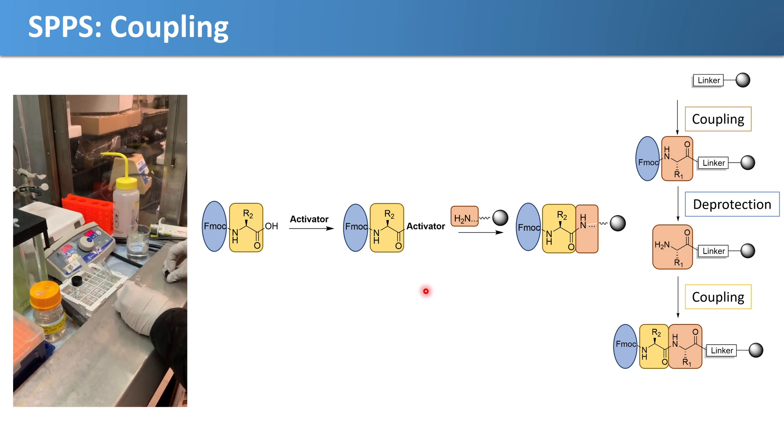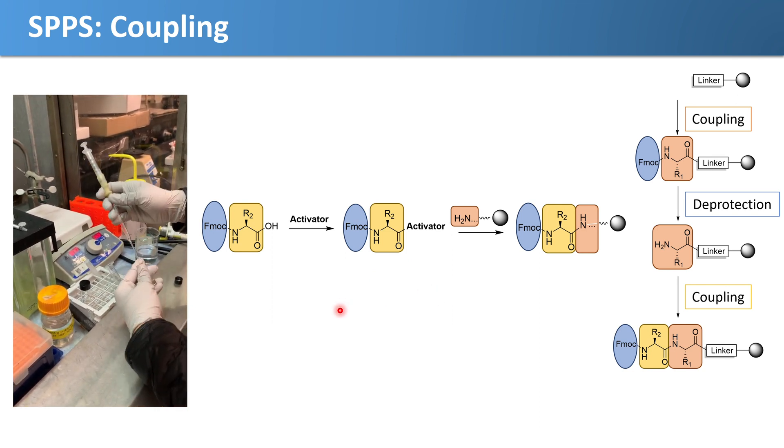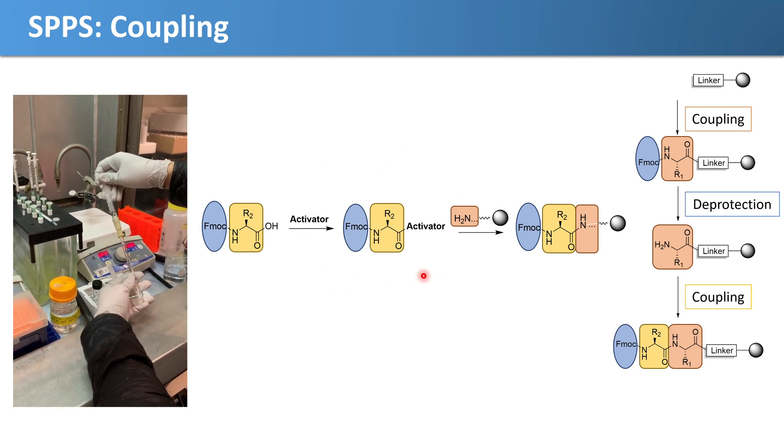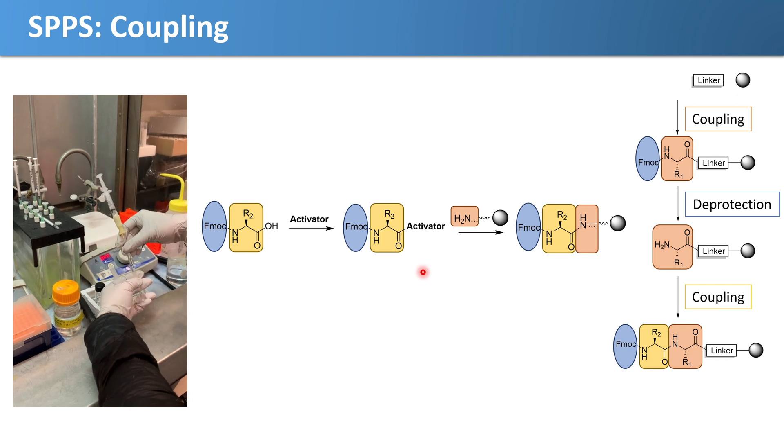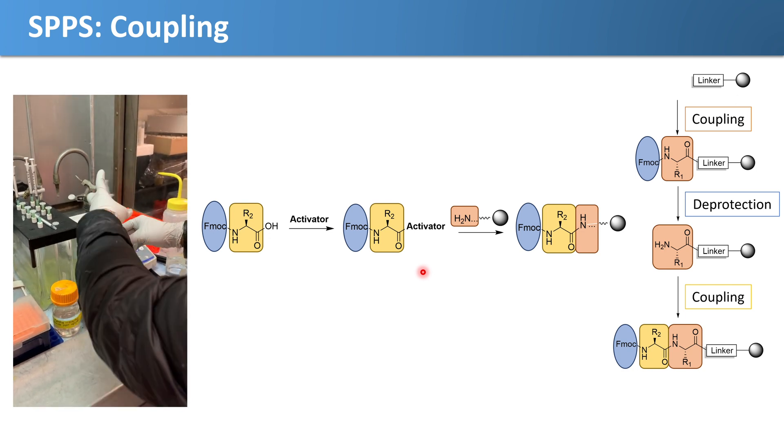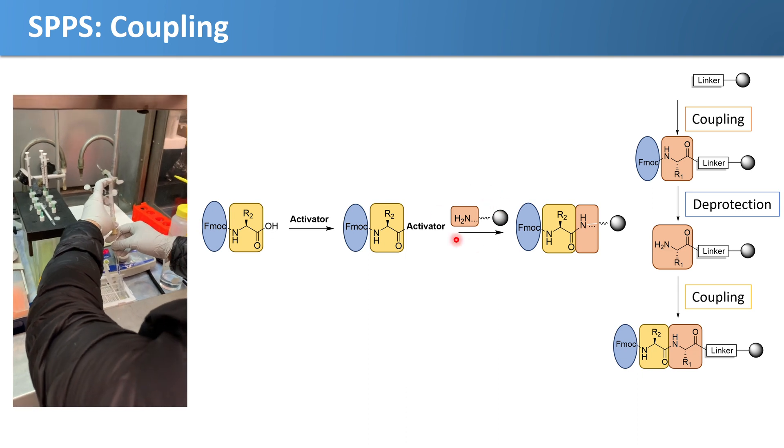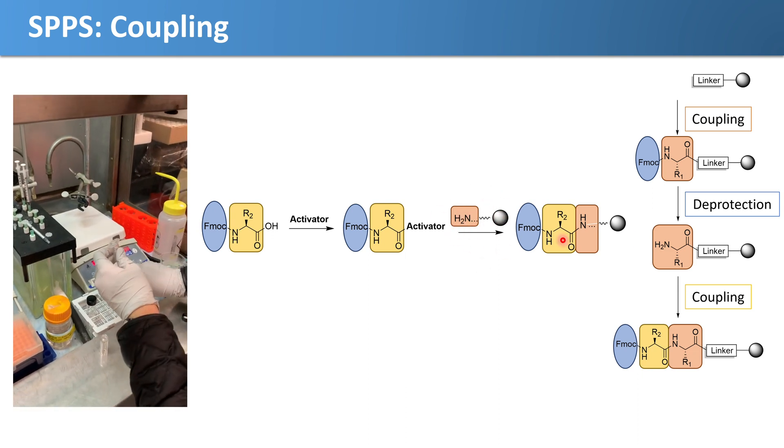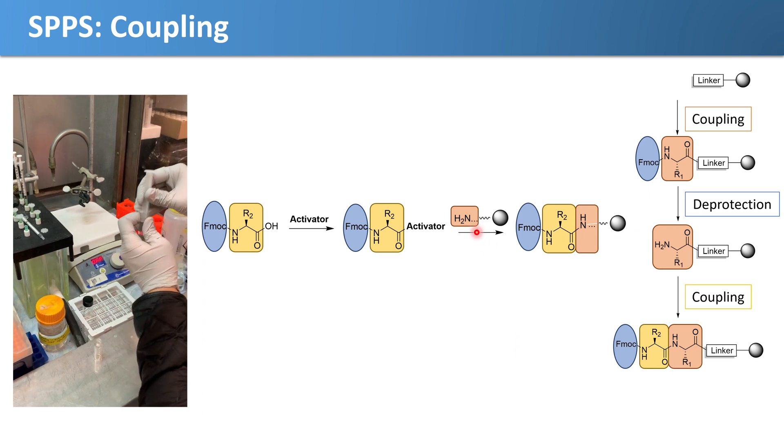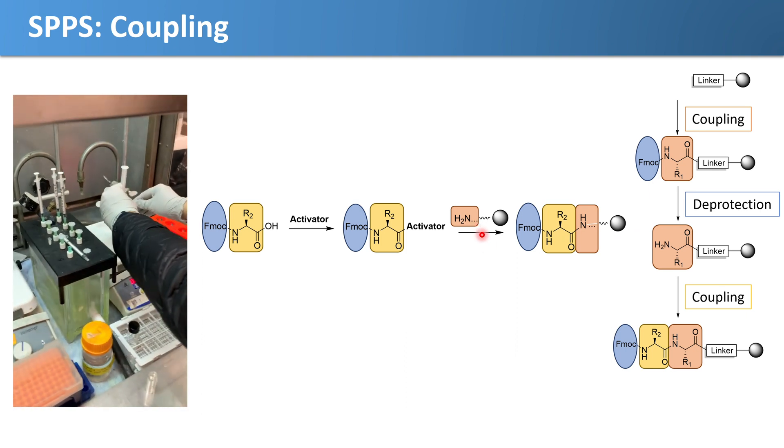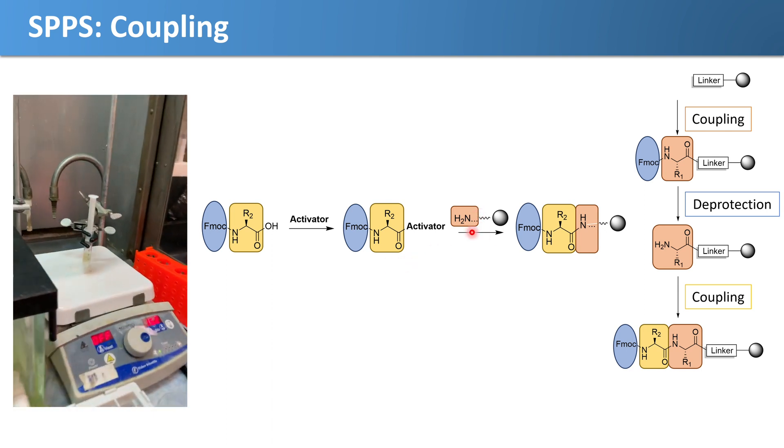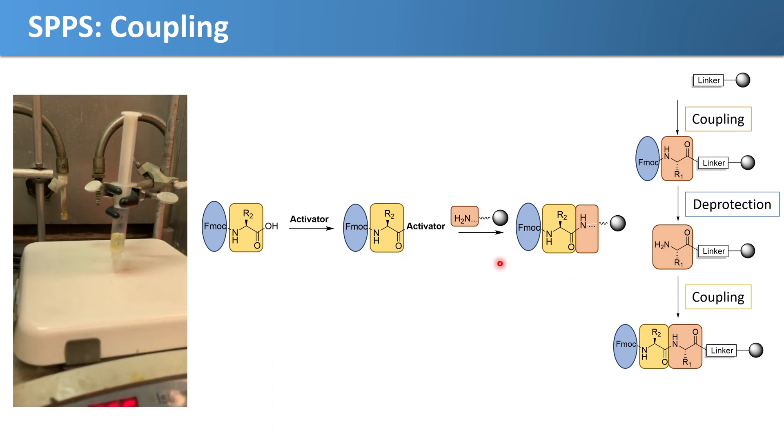Now she is ready to add the activated yellow amino acid to our reaction vessel, which has the growing peptide chain with the free amine of our orange amino acid. Then she will leave the two of those to stir and react to end up with this product here.